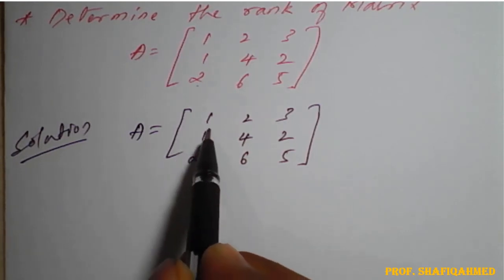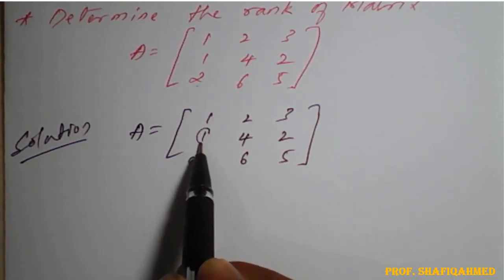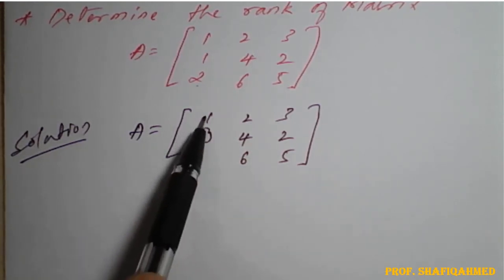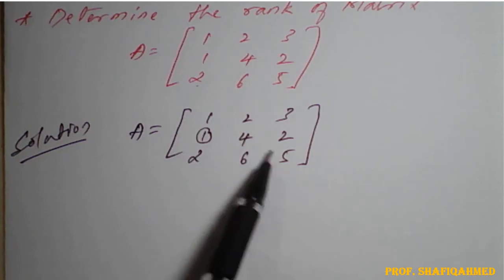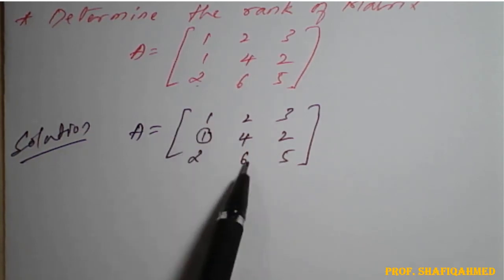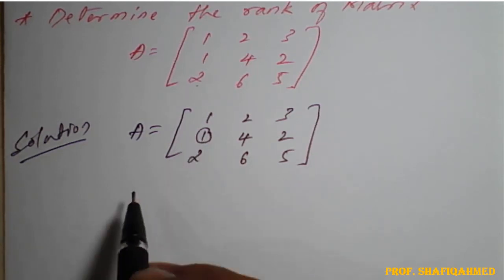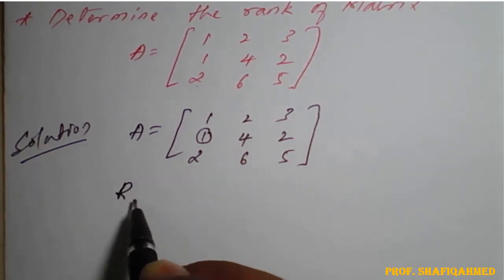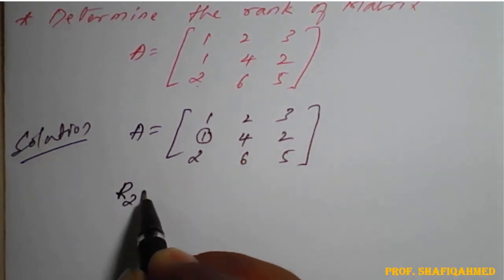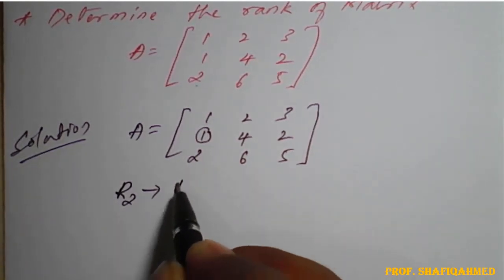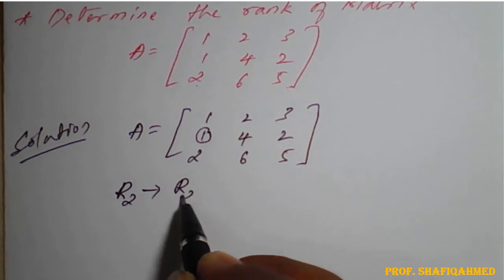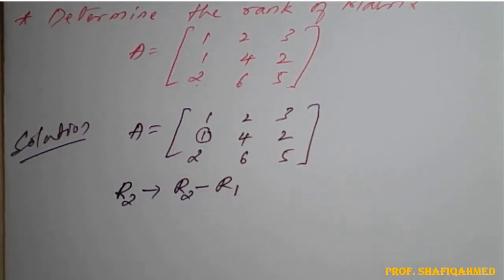Our target is to make the element below the first diagonal position 0. First, we will make the second row's first element 0. The formula is: on R2, we operate R2 minus R1.